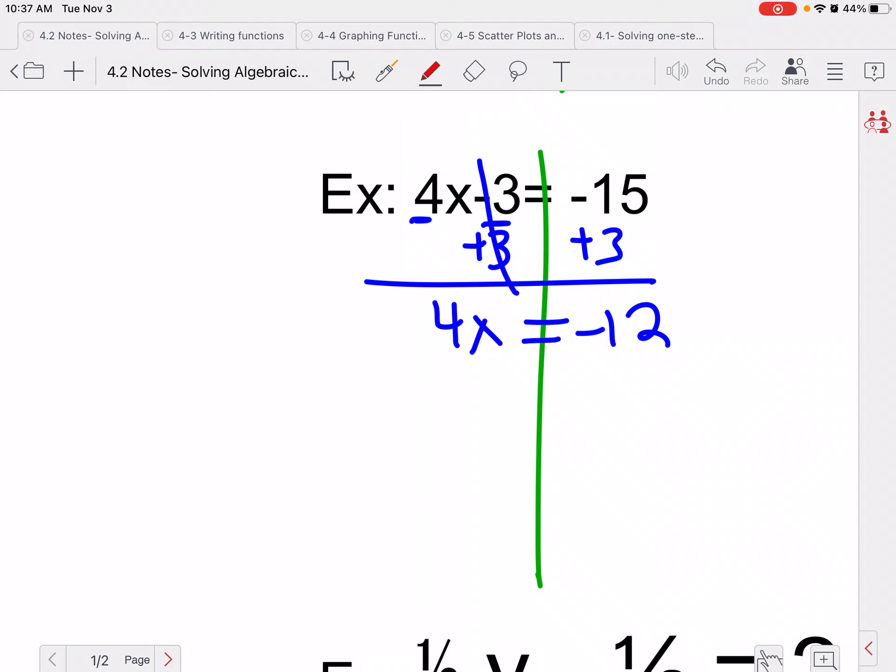Now I say what is stopping x from being by itself, and that would be 4. And the 4 is being multiplied by x, so I'm going to divide both sides by 4. 4 over 4 cancels to be 1, so I'm left with x equals negative 3, because 4 goes into negative 12 negative 3 times.